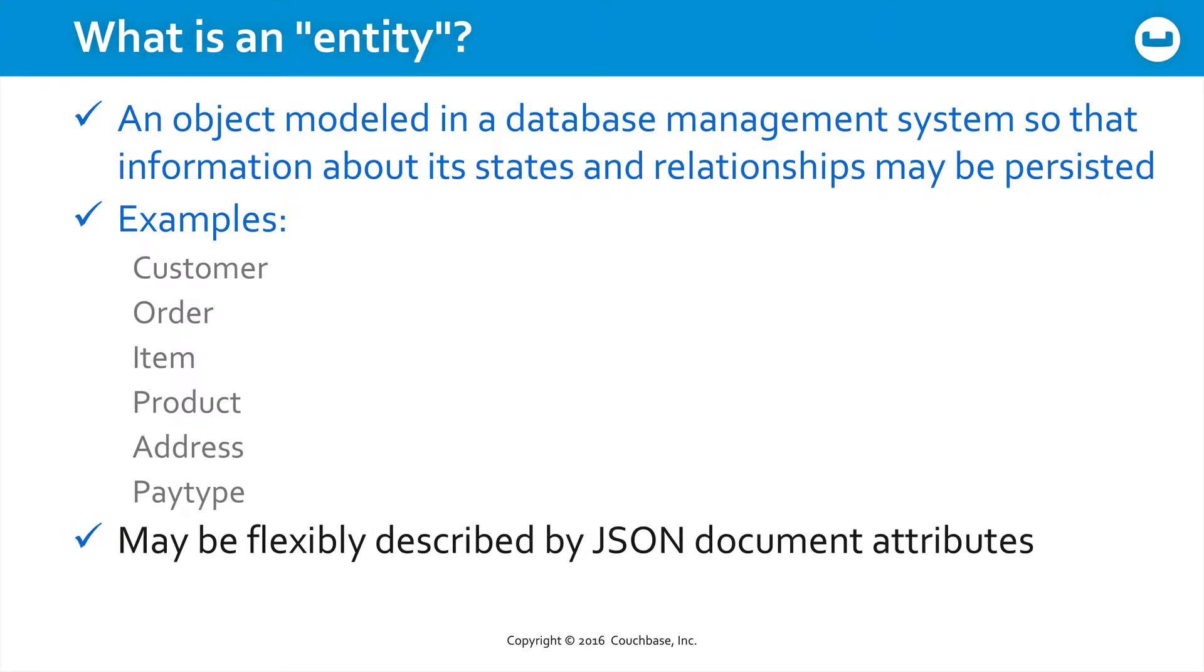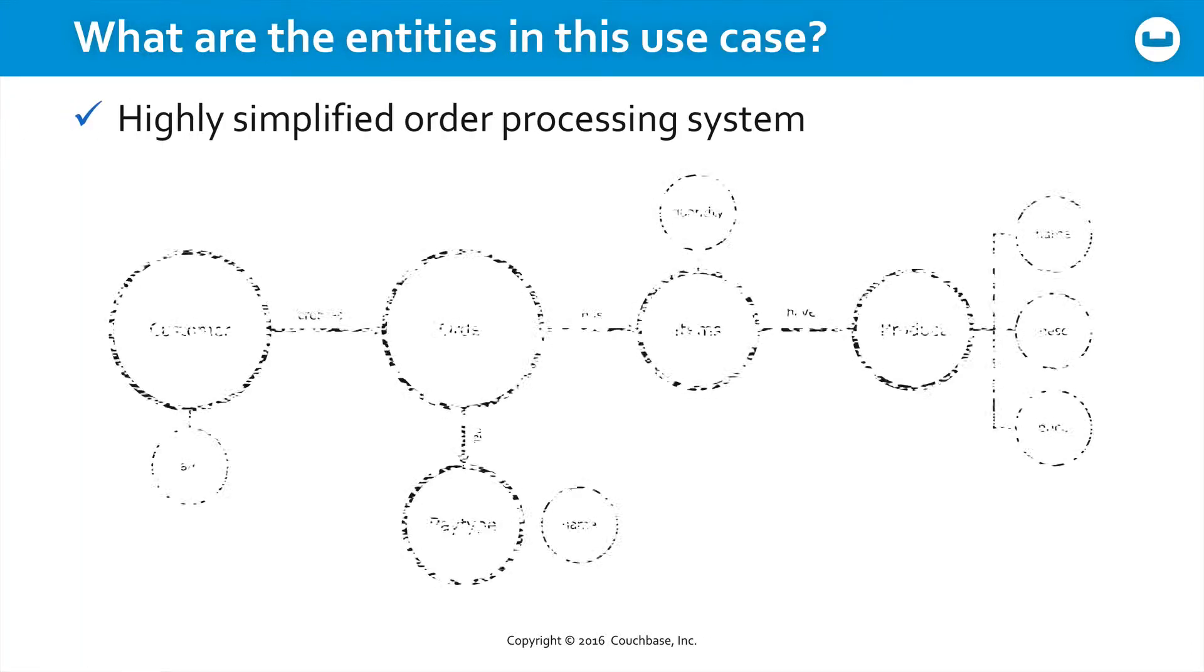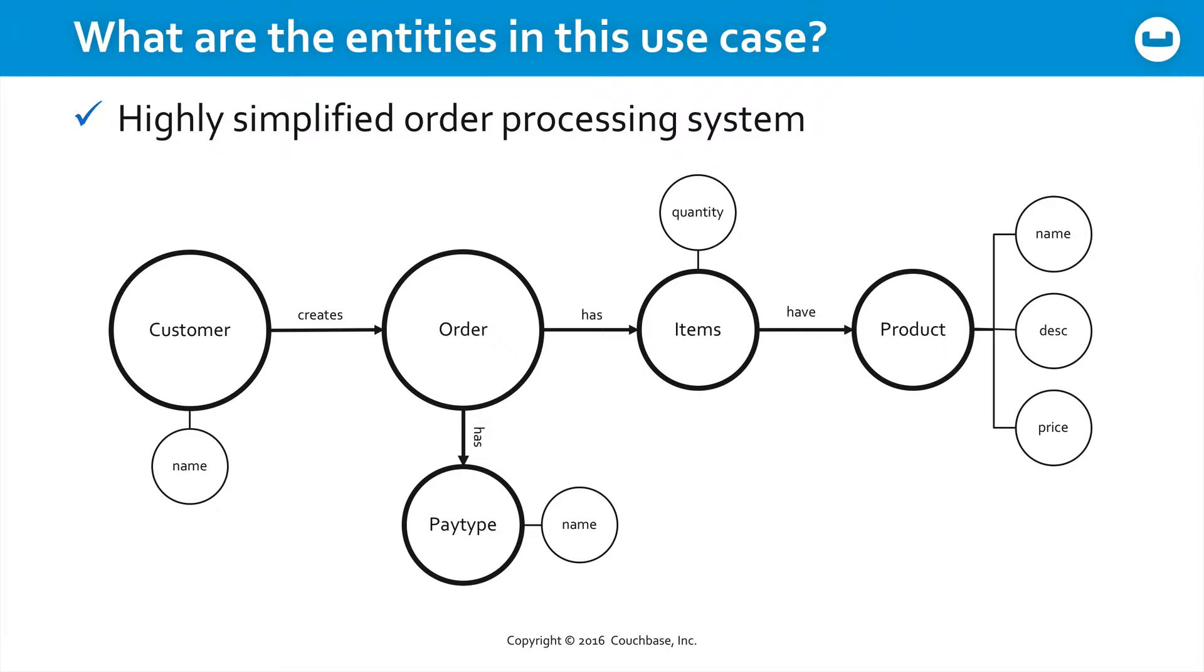So the question becomes, how can you describe those in JSON document attributes? What are the entities in this very simple use case? Imagine you have a customer who creates an order. That order has a pay type. The order also has one or more items associated with it, and each one of those items, each row in the order, has a product assigned to it.